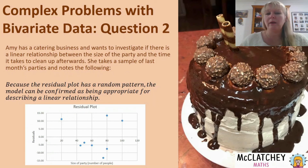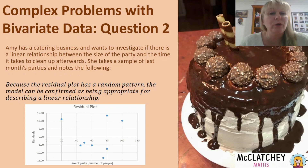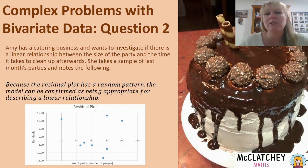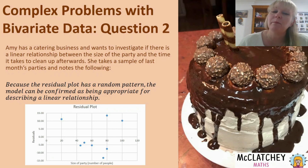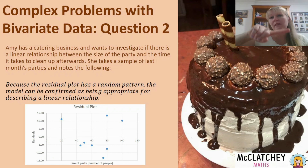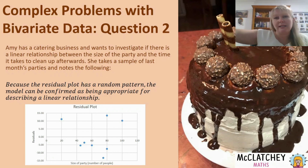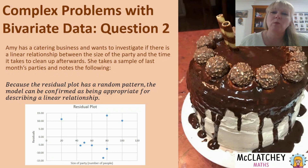We need to discuss whether the residual plot indicates a linear or non-linear relationship. I can see that the pattern is completely random, and that's what we want to see to confirm a linear relationship. Because the residual plot has a random pattern, the model can be confirmed as appropriate for describing a linear relationship. On the flip side, if the points roughly formed a parabola or an exponential curve, then we'd know it's not a linear relationship because the pattern is not random.